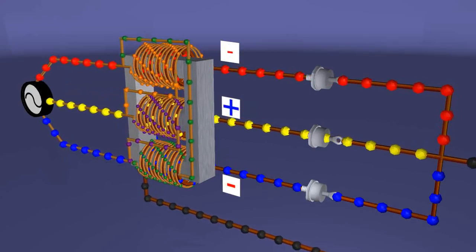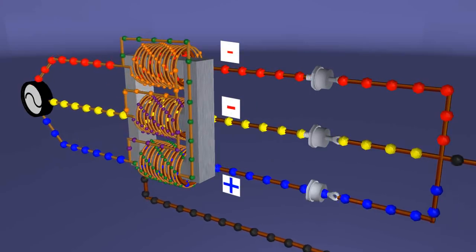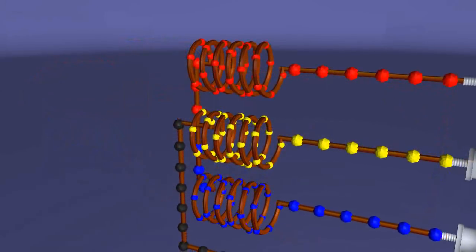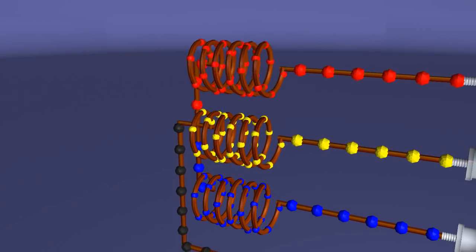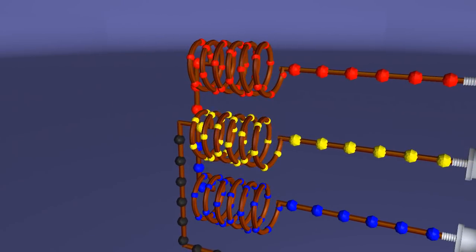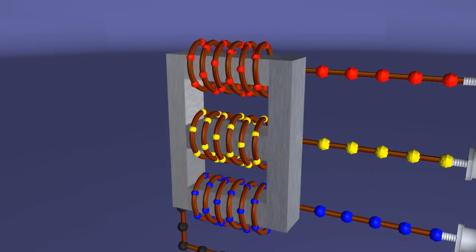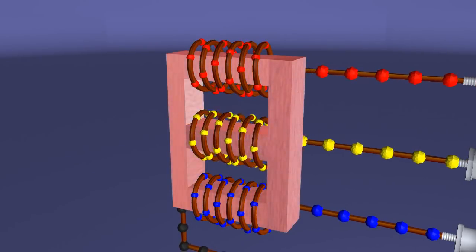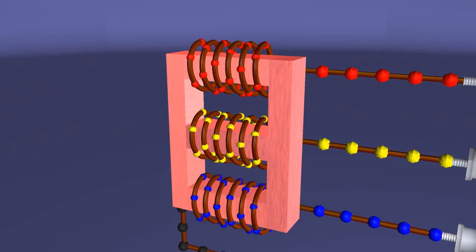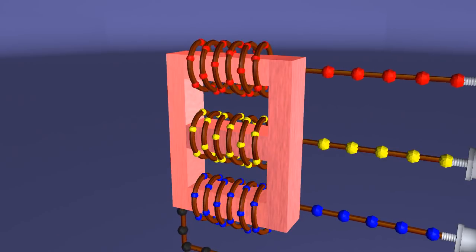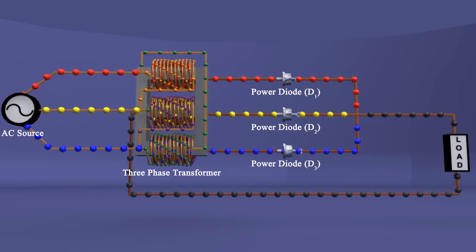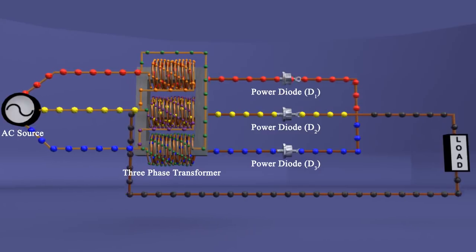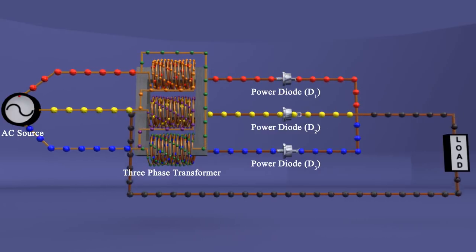The limitation of this rectifier is that the secondary winding consists of DC component of current, which can cause the transformer core to get under-saturation problem. Therefore, it is not advisable to use three-phase half-wave rectifier for large power applications.